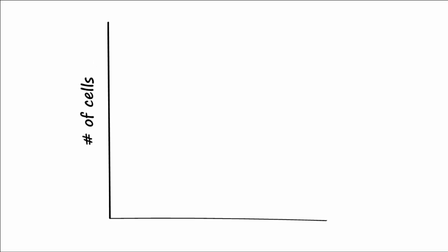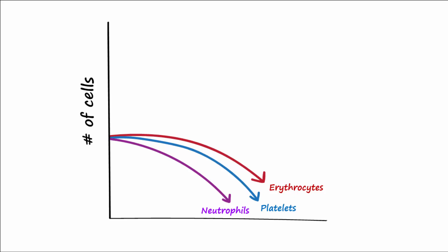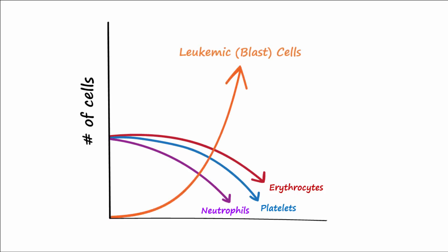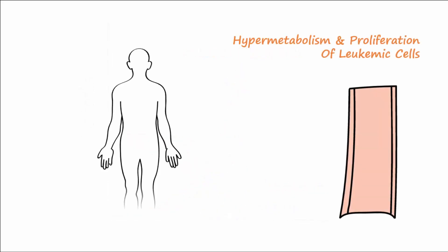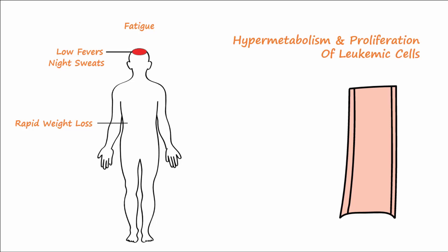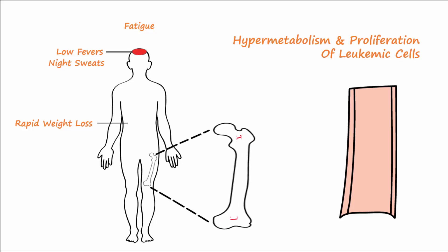One could find all of these manifested in both AML and ALL. While the number of healthy blood cells being produced is declining, the number of unhealthy blast cells — now referred to as leukemic cells — is rising, presenting even more symptoms. The rapid proliferation and hyper-metabolism of leukemic cells affects the hypothalamus, bringing about low fevers and night sweats. The utilization of so much energy in producing these leukemic cells also causes fatigue and rapid weight loss. The leukemic cells continue to build up in the bone marrow, putting pressure on the bone causing expansion, which results in pain and tenderness in bones and joints.